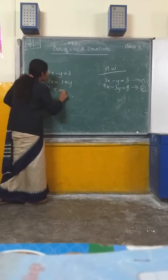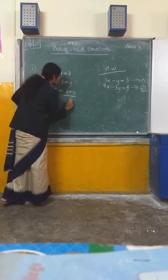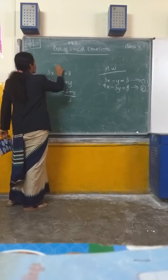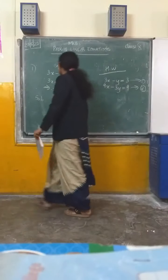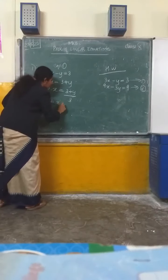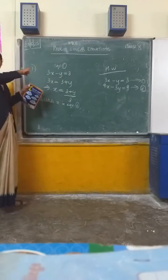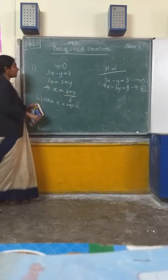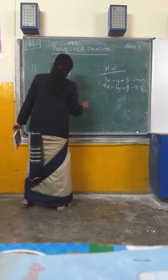Then x equals 3 plus y divided by 3. After that, what should you do? Substitute x in equation number 2. So first I consider equation number 1 and write x in terms of y. Then that x we substitute in equation number 2. When you are substituting, what will you get?